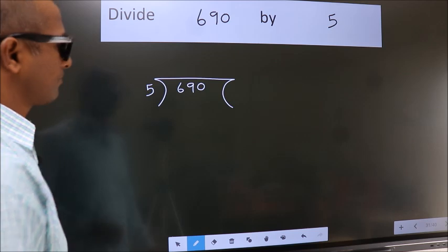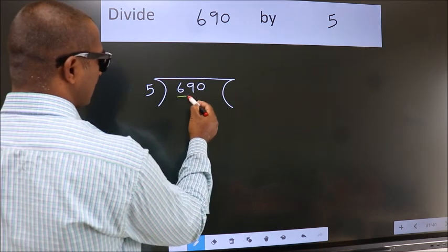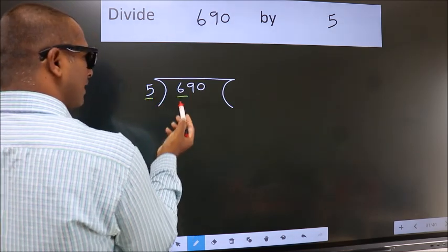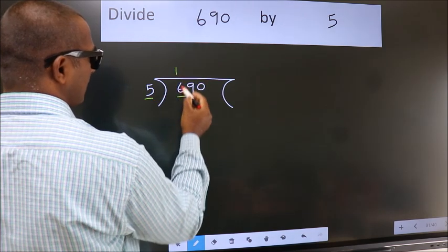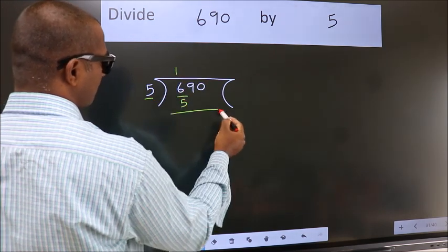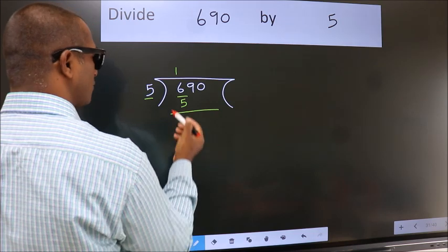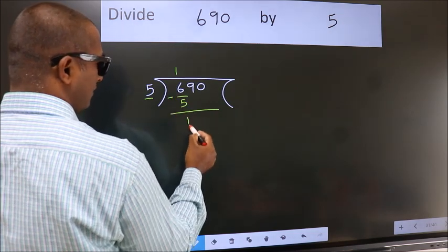Next. Here we have 6, here 5. A number close to 6 in 5 table is 5 once 5. Now, we should subtract. We get 1.